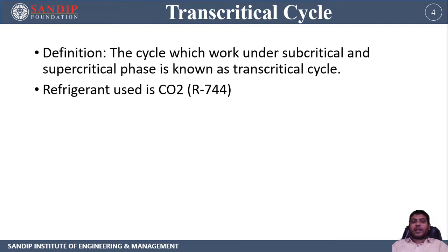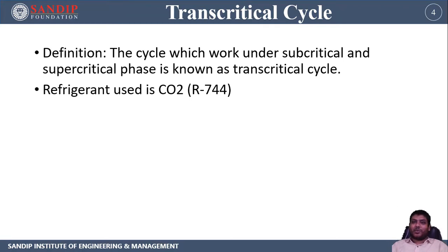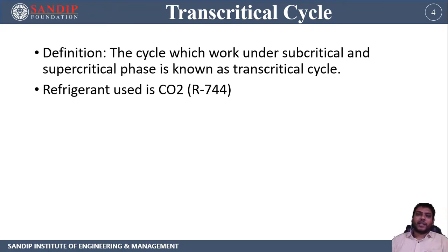The topic is the transcritical cycle. There are two types of cycles: one that works below the critical point, known as the subcritical cycle, and one that works above, known as the supercritical cycle. The cycle which works under both subcritical as well as supercritical phase is known as the transcritical cycle. If a cycle has high pressure above the critical pressure of the working fluid, we call it a transcritical cycle. The refrigerant used is carbon dioxide, with refrigerant number R744.